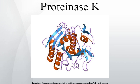Proteinase-K is used for the destruction of proteins in cell lysates and for the release of nucleic acids, since it very effectively inactivates DNases and RNases. Proteinase-K is very useful in the isolation of highly native, undamaged DNA or RNA, since most microbial or mammalian DNases and RNases are rapidly inactivated by the enzyme, particularly in the presence of 0.5–1% SDS.